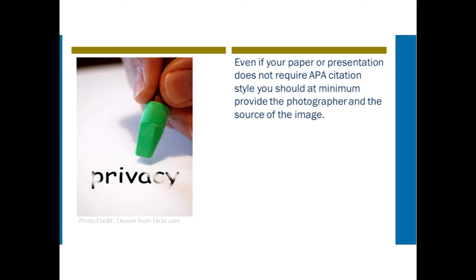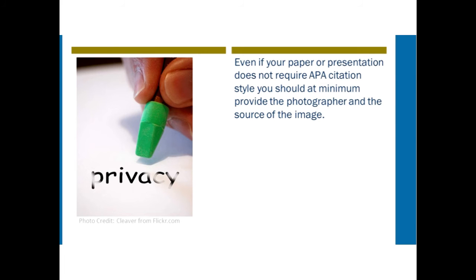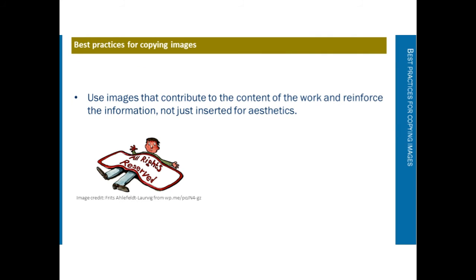Even if your paper or presentation does not require APA citation style, you should at minimum provide the photographer and the source of the image. For example, you could write 'Photo credits:' and then the name and source from Flickr. This tells everyone where you got it from and makes clear it's not your own work.